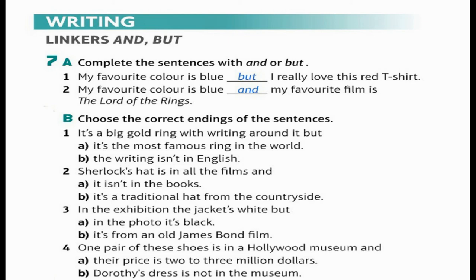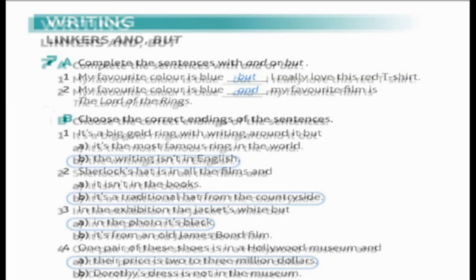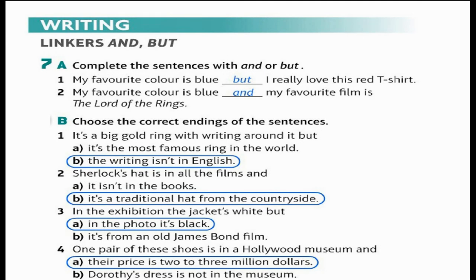Choose the correct endings for the sentences. 1. It's a big gold ring with writing around it, but the writing isn't in English. 2. Sherlock's hat is in all the films and it's a traditional hat from the countryside. 3. In the exhibition the jacket's white, but in the photo it's black. 4. One pair of these shoes is in a Hollywood museum and their price is 2 to 3 million dollars.